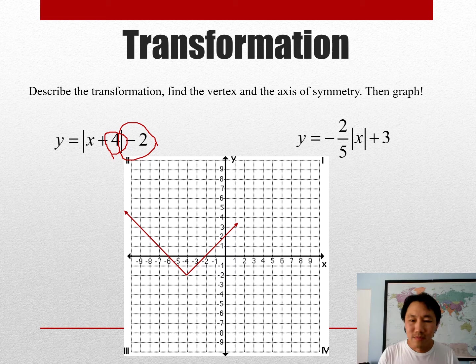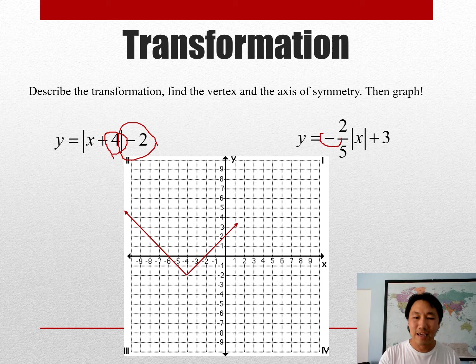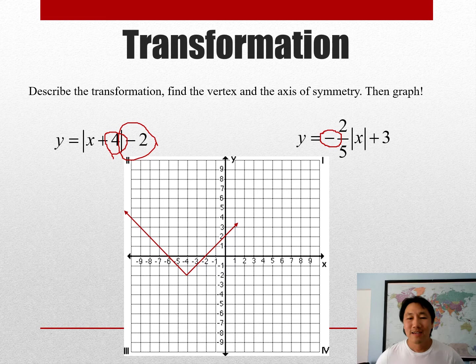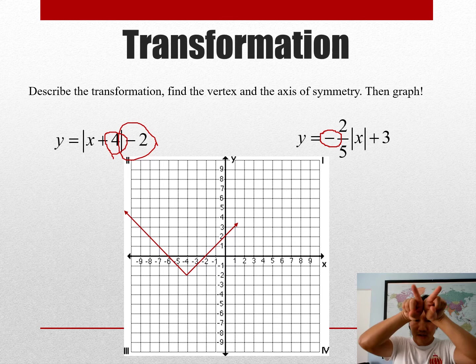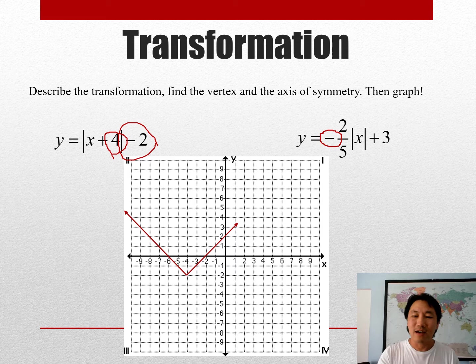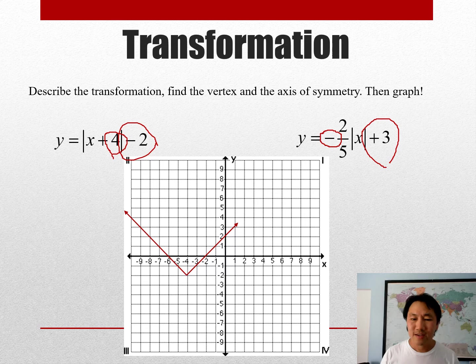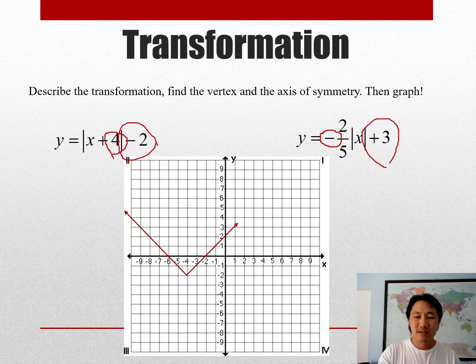Here's another one. Let's see what some of these things do. The negative in the very front, hmm, if you think about it, it does reflect it across the x-axis. So instead of a V going up, it's now a V facing down. I'll skip the two-fifths for right now. The three moves the whole graph up three units.